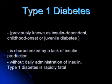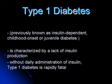There are three main types of diabetes: type 1, type 2, and gestational diabetes. In type 1, previously known as insulin-dependent, childhood-onset or juvenile diabetes, it is characterized by a lack of insulin production, and without daily administration of insulin, type 1 diabetes is rapidly fatal.